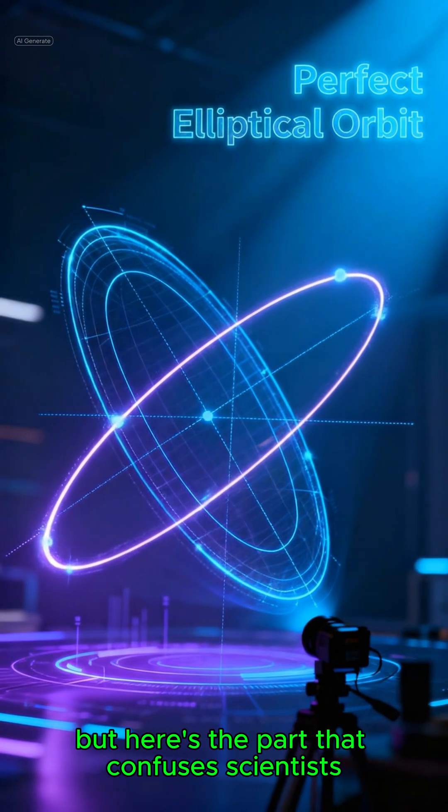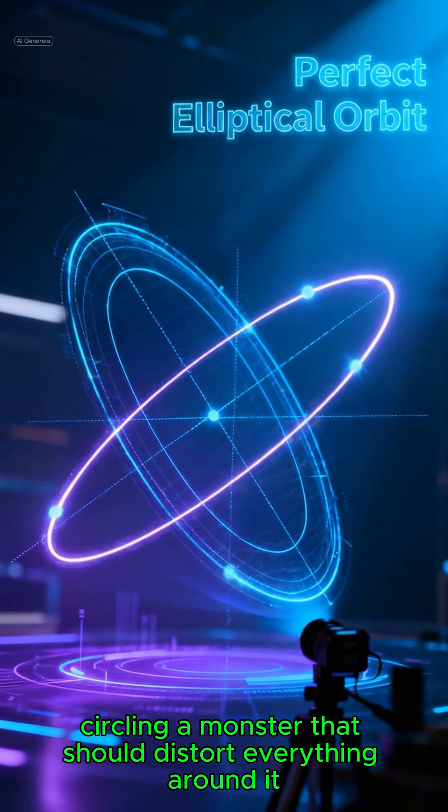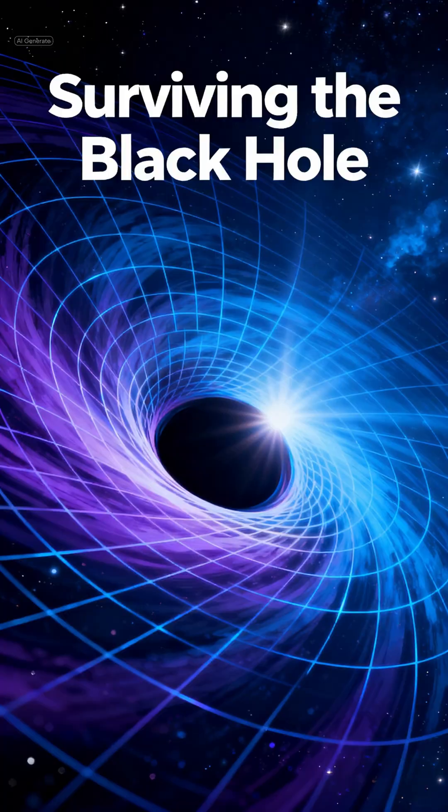But here's the part that confuses scientists. S2's orbit is so perfect, so mathematically precise, it behaves like a cosmic clock circling a monster that should distort everything around it.